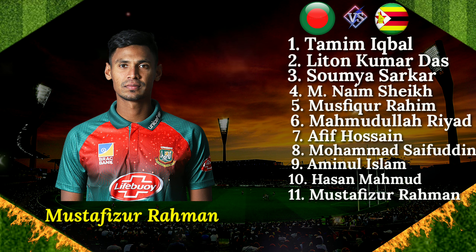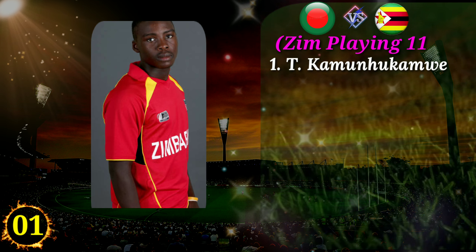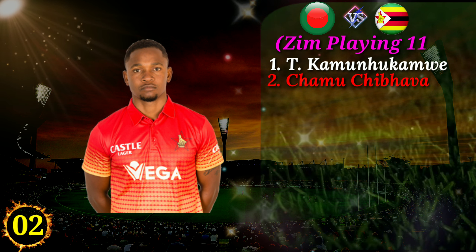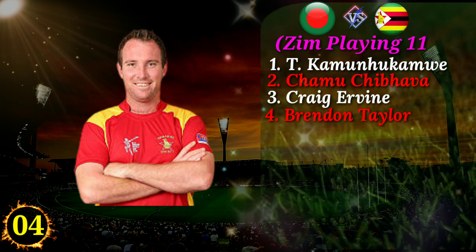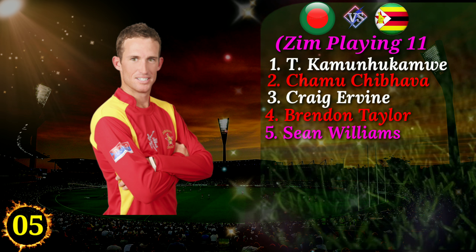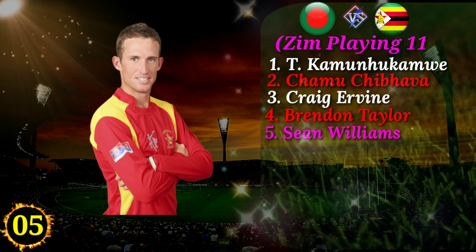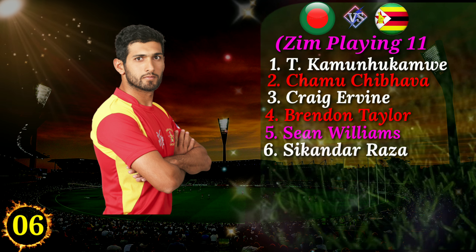Zimbabwe team playing 11. Number 1 right-handed batsman Tinashe Kamunhukamwe. Number 2 all-rounder Chamu Chibhabha. Number 3 left-handed batsman Craig Ervine. Number 4 wicket-keeper and right-handed batsman Brandon Taylor. Number 5 all-rounder Sean Williams. Number 6 batting all-rounder Sikandar Raza.